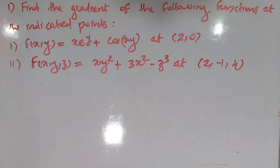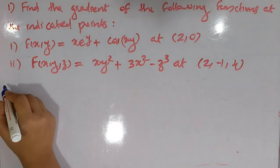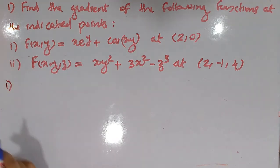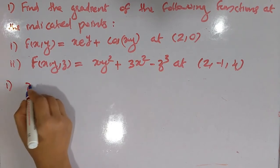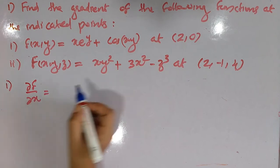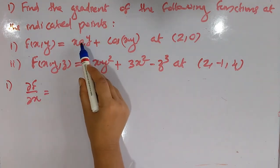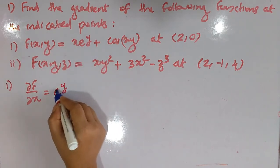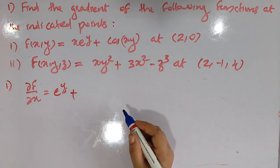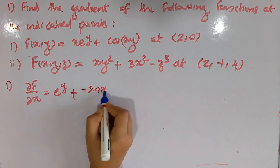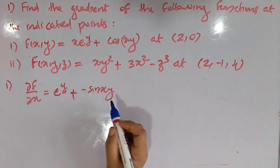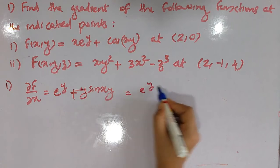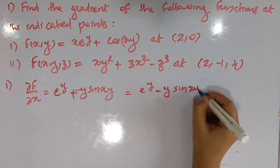For the first function, we compute the partial derivatives. Dou f by dou x equals e raised to y minus y sin(xy).